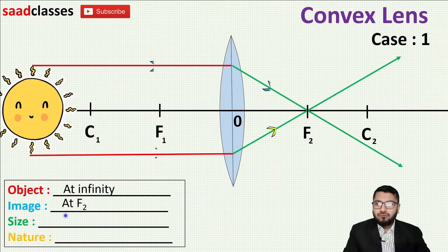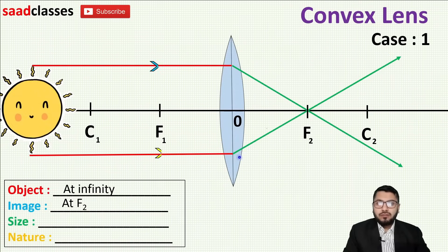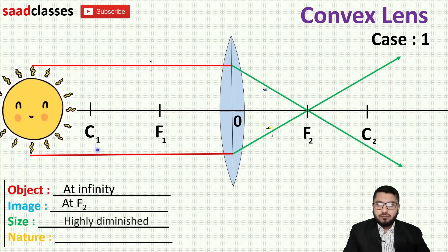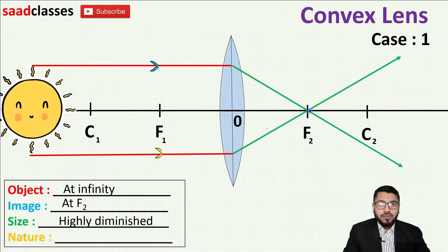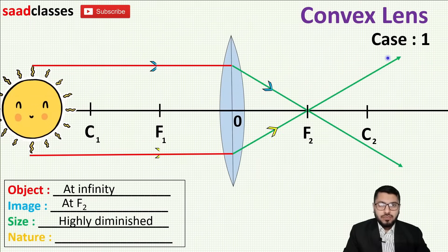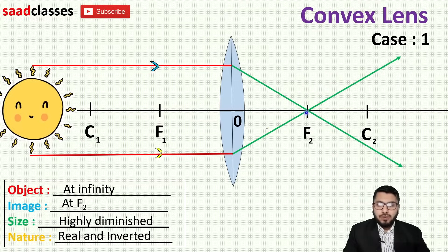My image is formed at F2 because there are two focuses, so write F2 for clarity. The size of the image is point size, or you can write highly diminished — both are correct. The nature is real and inverted because the image is formed by real rays. Solid lines depict real rays. The real image is always inverted — keep this in mind.